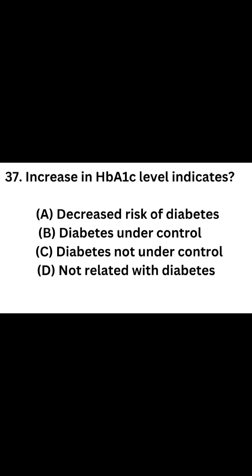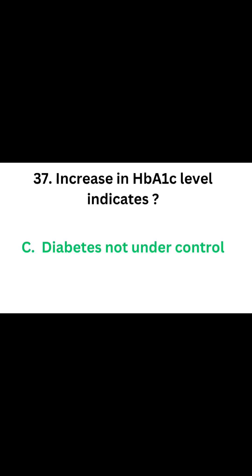Question number 37. Increase in HbA1c level indicates: Option A: Decreased risk of diabetes. Option B: Diabetes under control. Option C: Diabetes not under control. Option D: Not related with diabetes. The correct answer is Option C, Diabetes not under control. Increase in HbA1c level indicates diabetes not under control.